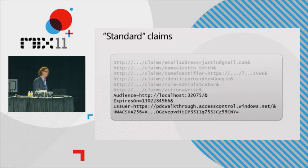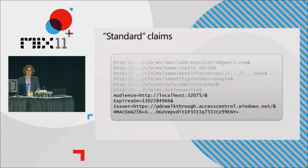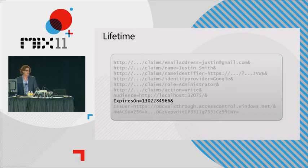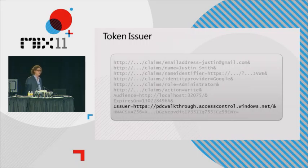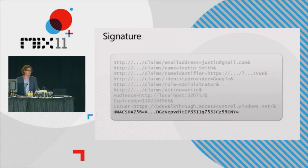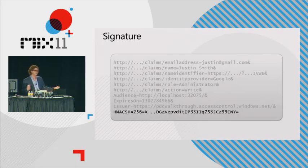The top claims in a Simple Web Token are identity claims issued by Google. Below those are role and permission claims issued by the access control service - the holder is an administrator and has write permission. There are also standard claims ACS always adds: 'audience' is the scope of the token - a URI indicating where the token is intended to be sent; 'expires' is an epoch time expiration; 'issuer' is the access control service full URL, which your app can use to validate tokens; and finally there's the HMAC SHA-256 signature. Your app recalculates the hash to validate - ACS and your app are the only entities that have the secret used to generate it.